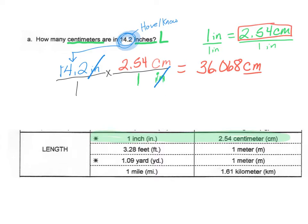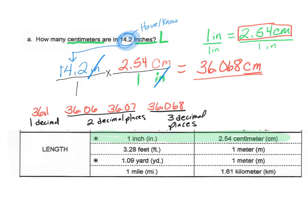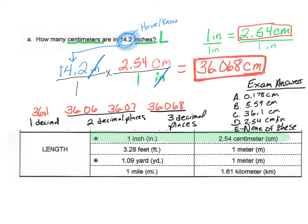Don't worry about the exact decimal — whether it's 36.06 or 36.068 — because it is a multiple choice question on your exam. If the answer says to put it to two decimal places, go ahead and do that. You should not see a question about decimal places on the exam itself, but you may see it on the online homework. Now let's move on to letter B.